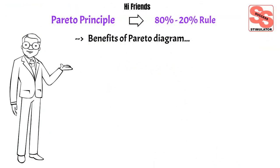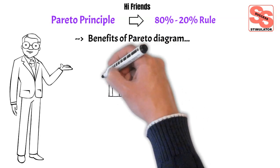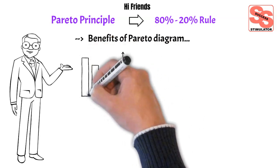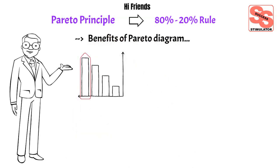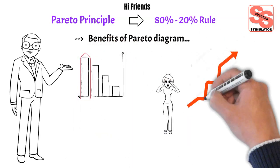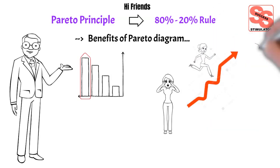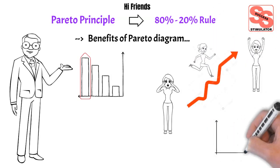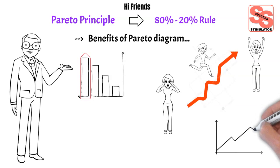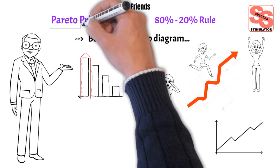Benefits of Pareto diagram: it identifies the major few problems, improves team performance faster than the common approach, and it improves the efficiency of the process, person, or team.